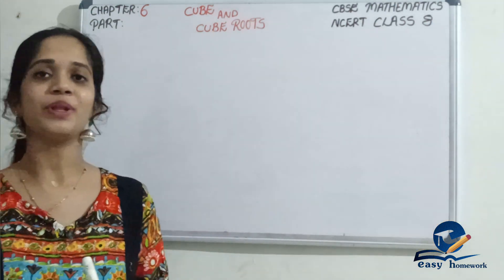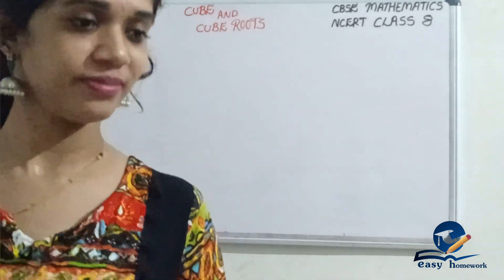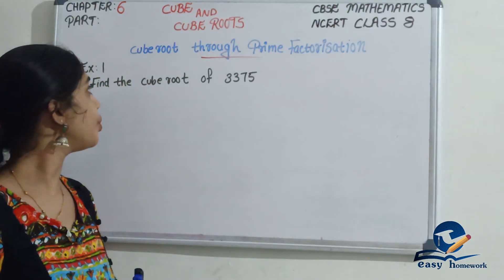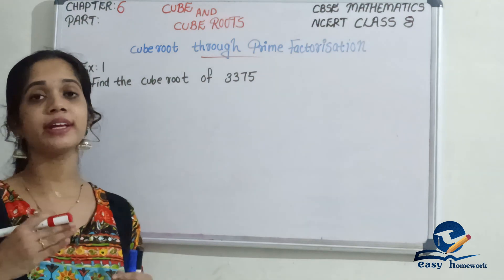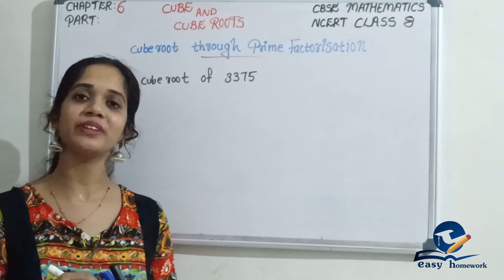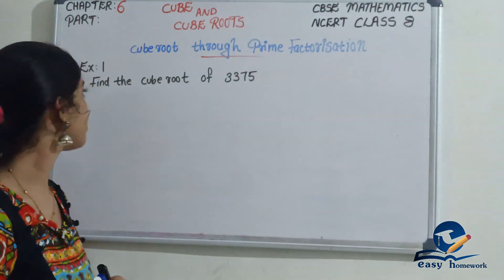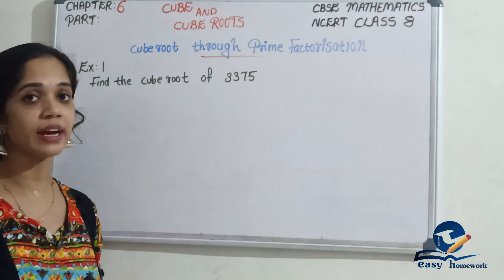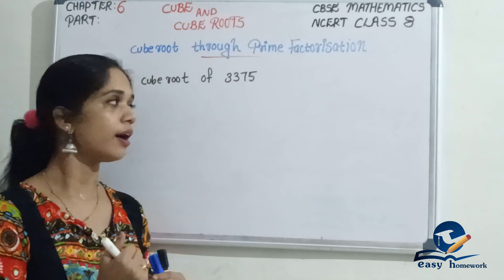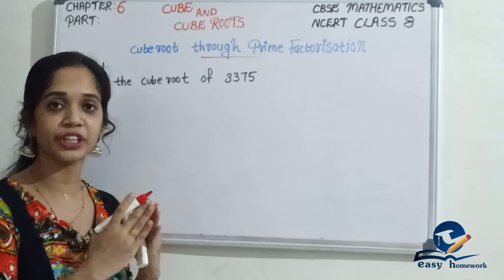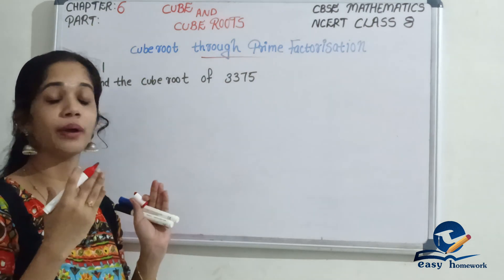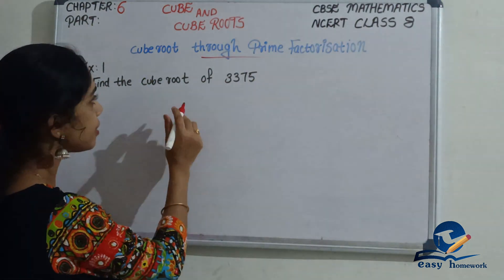Please remember these perfect cube roots. If you are going to study the cube root, please check the next example. The next topic is the cube root through the prime factorization method. The first question is: find the cube root of 3,375.